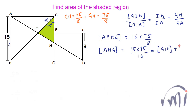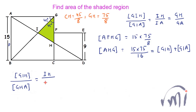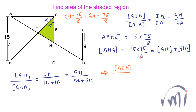The area of triangle AHG equals 75 times 15 divided by 16. The ratio of the area of triangle GIH to the area of triangle GHA equals IH divided by AH, which equals IH divided by (IH plus IA), and also equals GH divided by (AG plus GH). AG is 15 and GH is 75/8.